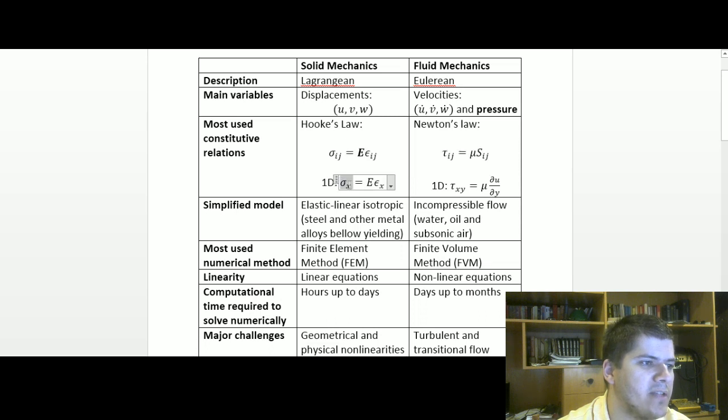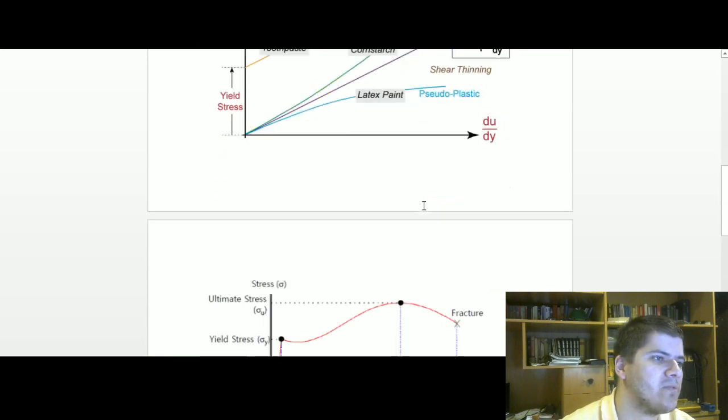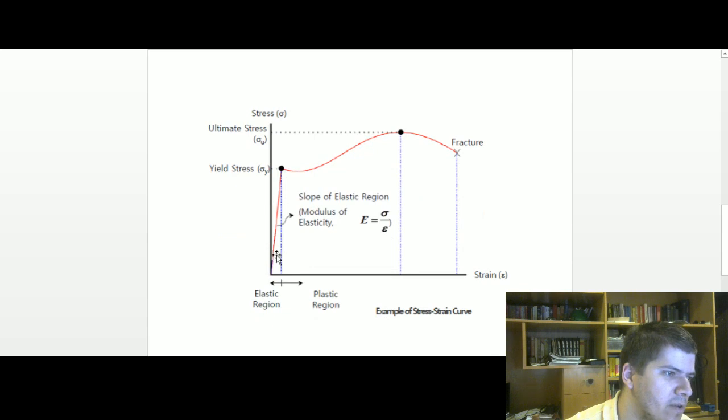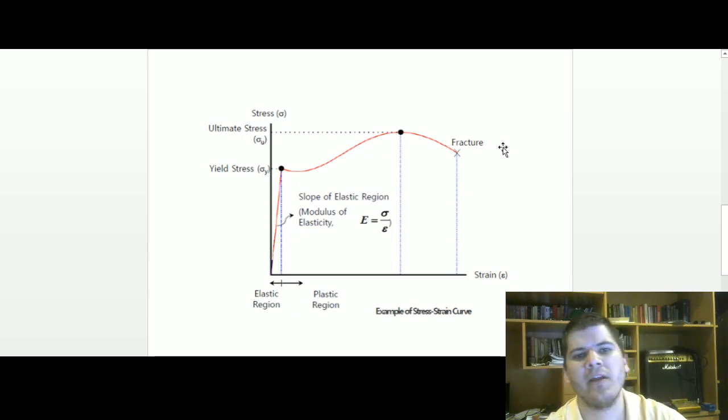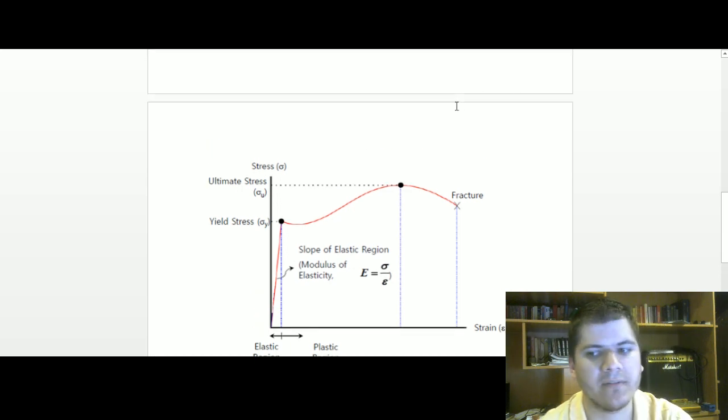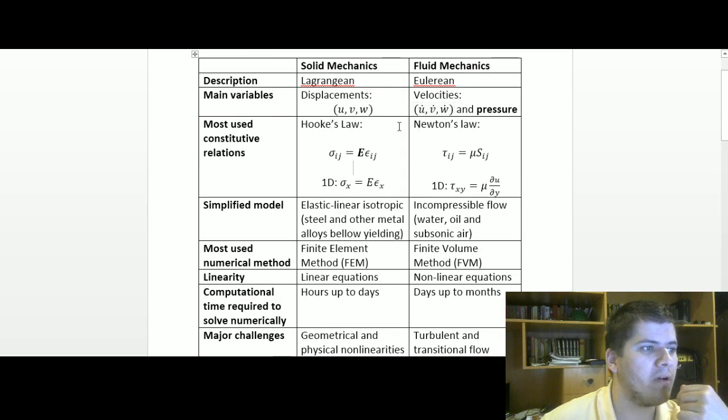For one-dimensional we have the stress in the x-direction related to Young's modulus of the material and the strain. It's a linear relationship between stress and strain. Here we have the elastic region of some material, with the yield and plastic region, which is usually the stress-strain graphic of metal alloys like steel, aluminum, etc.